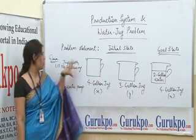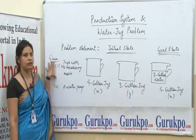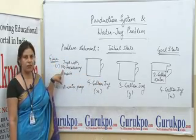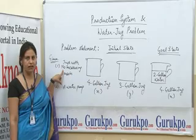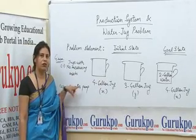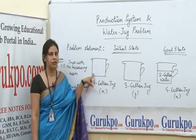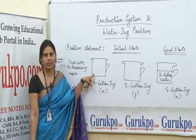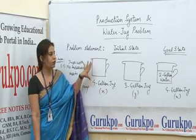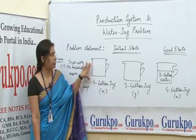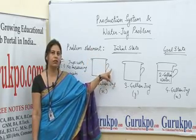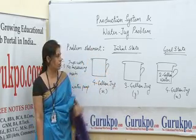What else is given with these jugs is that the jugs have no measuring marks, and a water pump by which we can supply water into these jugs. There is no limitation — we can apply the rules any number of times. This is the initial state defined, and we need to define the goal state.